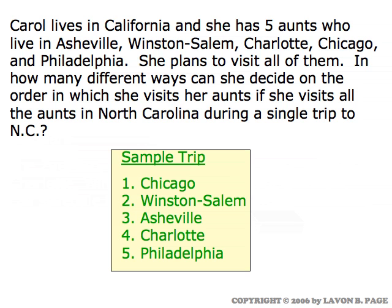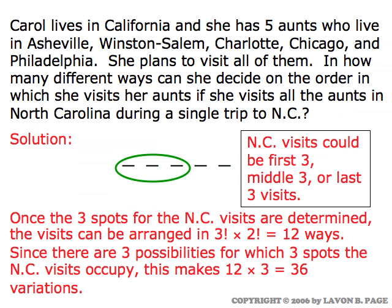In a third variation, for purposes of economy, Carol has decided she wants to visit all the aunts in North Carolina during a single trip. The North Carolina cities are Asheville, Winston-Salem, and Charlotte. She wants to plan her itinerary so that she does all three of those visits without having to come to North Carolina more than once. Sometimes when approaching a more complicated problem, it's good to simplify it first. So let's think about counting the ways she could plan her itinerary if she's going to hit North Carolina first.